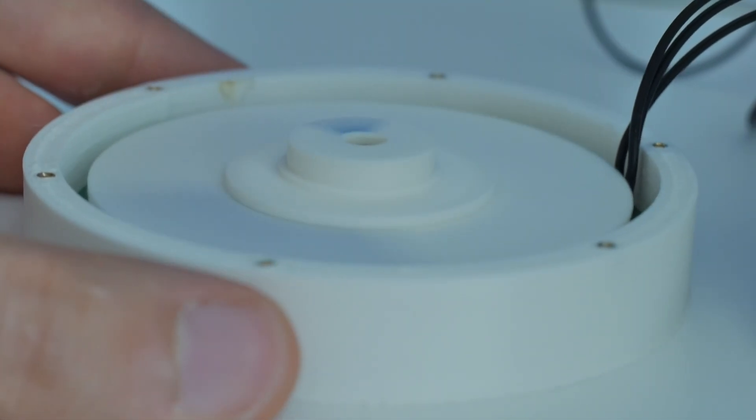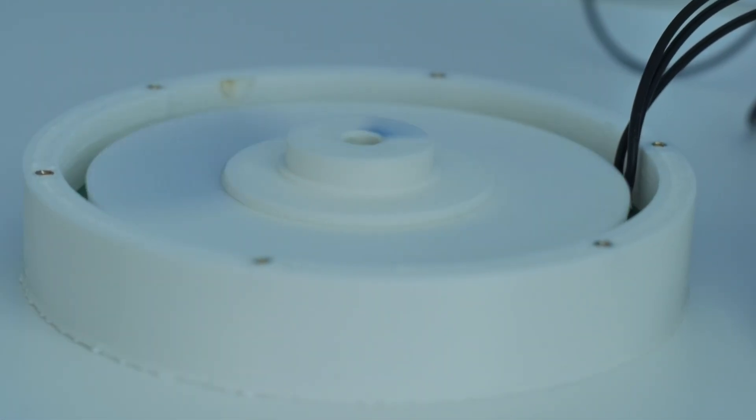This way, we can ditch the sensorless estimation of precision and spin the motor closed-loop from 0 to 5000 RPM.